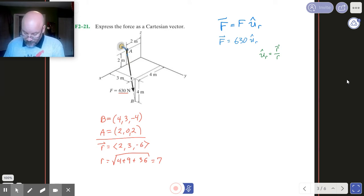We've got both of those already. So we're looking here then at 2, 3, negative 6, all divided by 7. So my vector that's unit magnitude will be 2/7, 3/7, -6/7, just like that. So there's my unit vector.